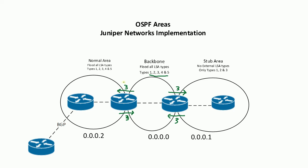The difference between a stub area and a standard normal area is that with the stub area, the type 3 LSA is the only type that will cross the ABR — the area border router, not the ASBR. However, on the other ABR, if we had an ASBR inside the backbone area, we would also be sending type 4 and type 5 LSAs. Similarly, with an ASBR on this side, we'd be sending type 4 and type 5 LSAs as well, in addition to the type 3s.